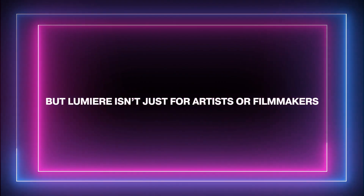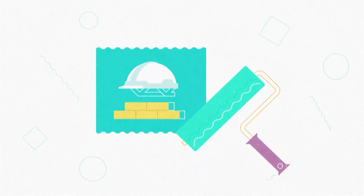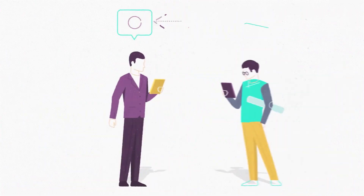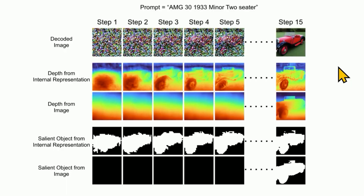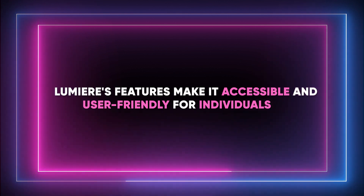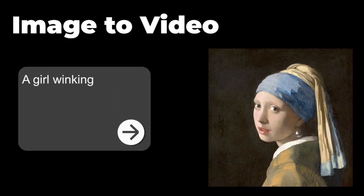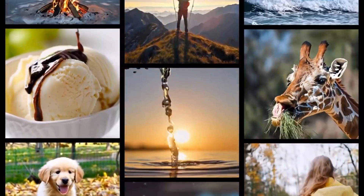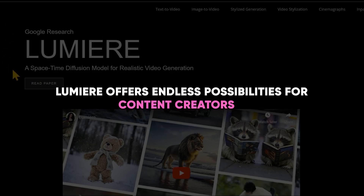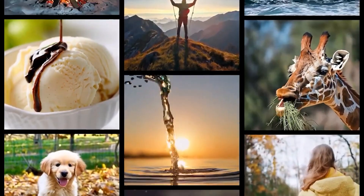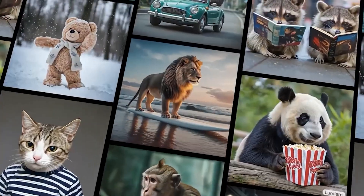But Lumia isn't just for artists or filmmakers. It also has practical uses in industries such as advertising, where eye-catching visuals are crucial to grab and retain audience attention. The ability to quickly produce high-quality and unique visuals with Lumia can give businesses a competitive edge in their marketing efforts. Furthermore, Lumia's features make it accessible and user-friendly for individuals of varying skill levels. With its intuitive interface and simple editing tools, anyone can use Lumia to enhance their videos without needing advanced technical knowledge. Overall, Lumia offers endless possibilities for content creators, businesses, and individuals alike, and its blend of artistry and practicality makes it a valuable tool in the ever-evolving world of media.